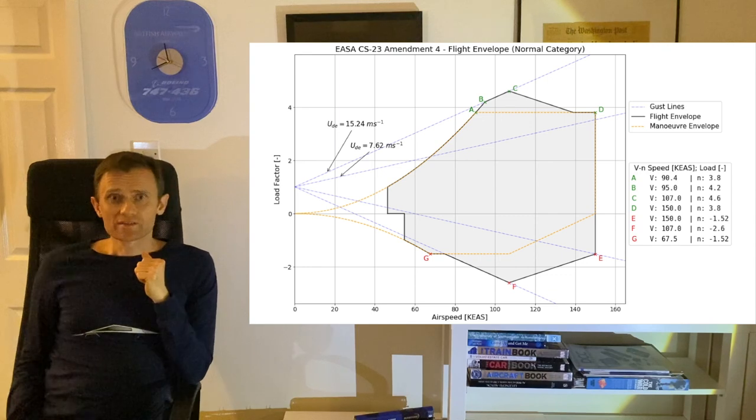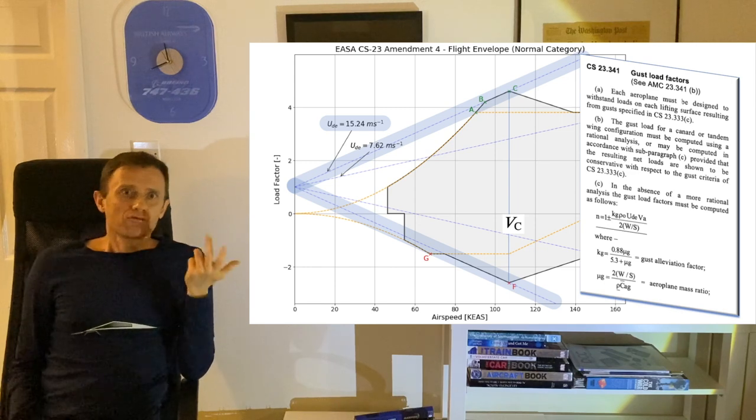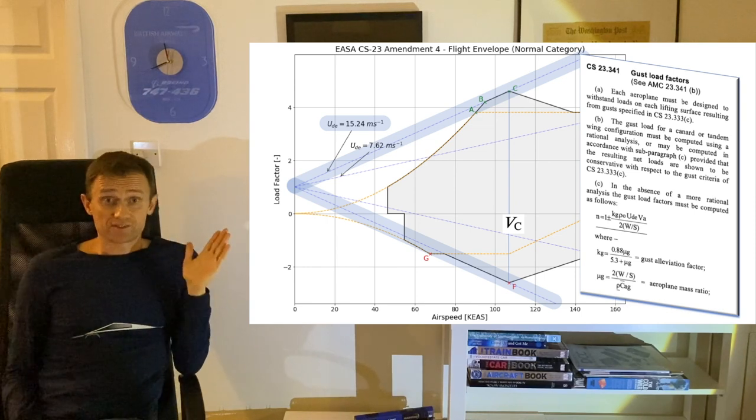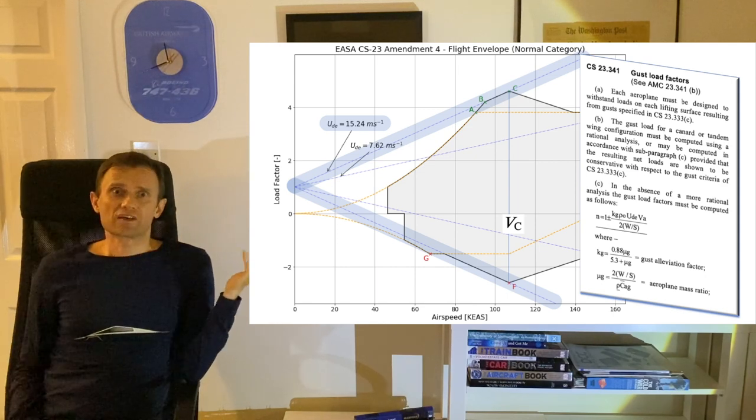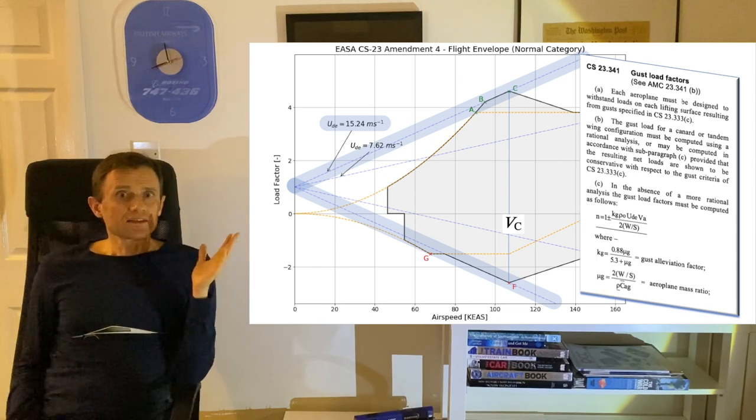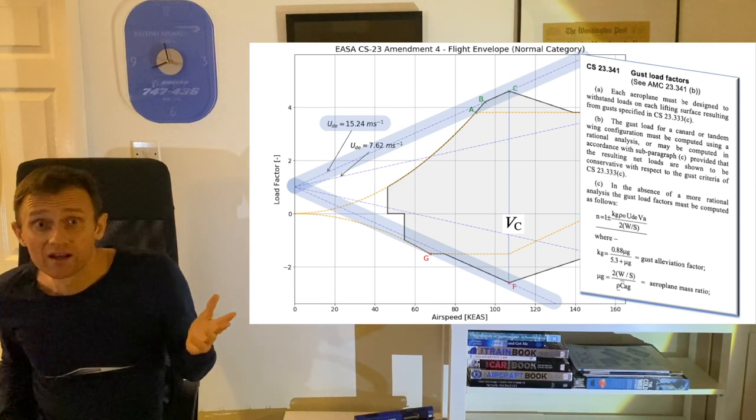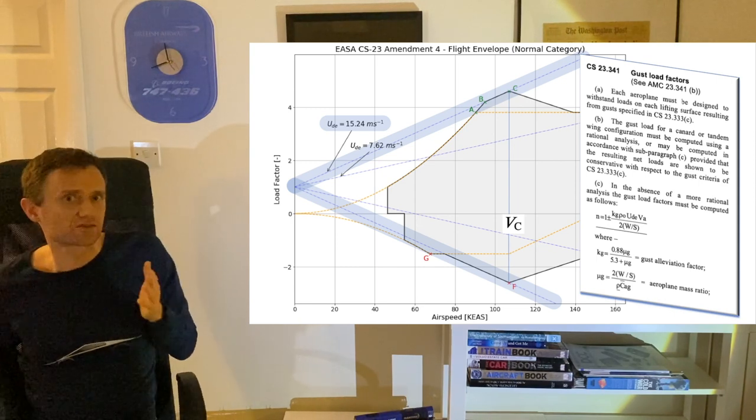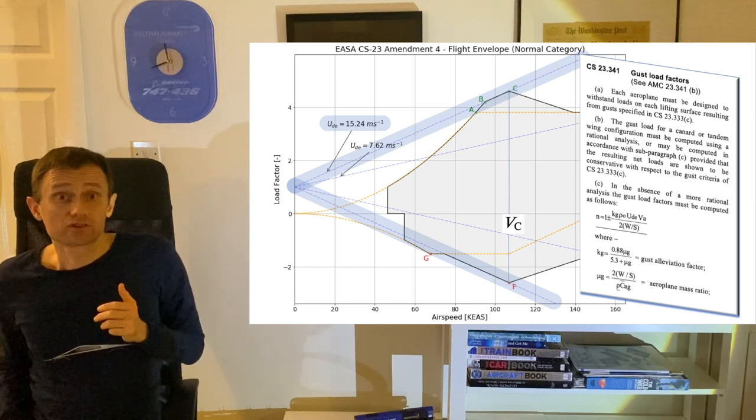CS 23.333 requires that we account for positive up and negative down gusts of 50 feet per second, or 15.24 meters per second, at VC at altitudes between sea level and 6096 meters, or 20,000 feet. Points C and F on the diagram indicate the load factor values calculated for plus or minus 50 feet per second respectively at this speed, and this gives us the first pair of gust lines. CS 23.341 tells us how to calculate the gust load factor as a function of airspeed.